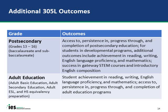For 305L only, there are additional postsecondary and adult education outcomes. Postsecondary education is defined as baccalaureate and subbaccalaureate, with outcomes including access to, persistence or progression through, and completion of education programs such as degree or certification programs. Adult education includes students 16 years or above outside the K–12 system in programs such as adult basic education, adult secondary education, adult ESL, and high school equivalency test preparation. The FY 2019 change also allows employment and earning outcomes—including hours of employment, job stability, wages, and benefits—for these populations.